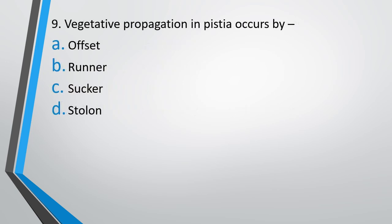Question number 9 (repeated). Vegetative propagation in Pistia occurs by: offset, runner, sucker, or stolon? The correct answer is option A, offsets.